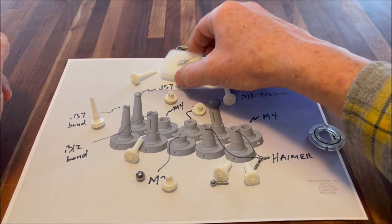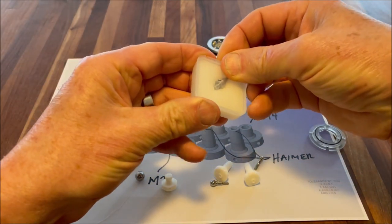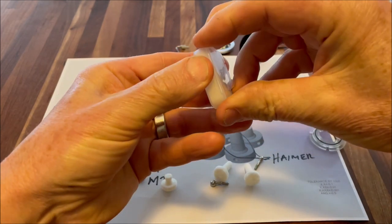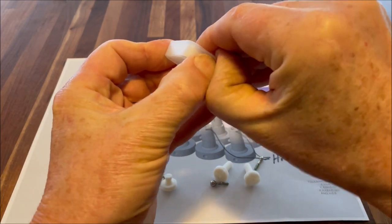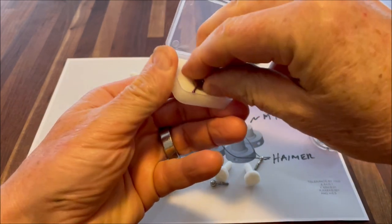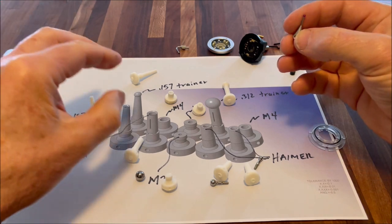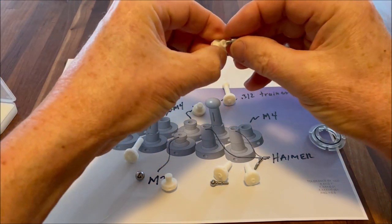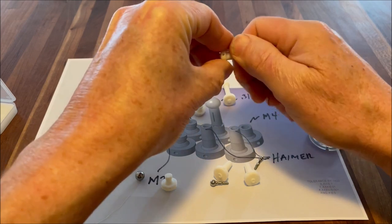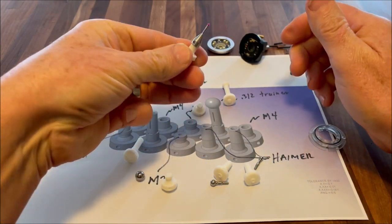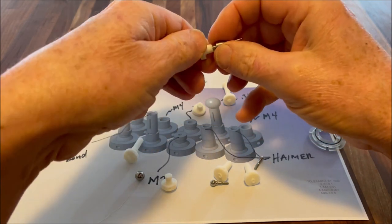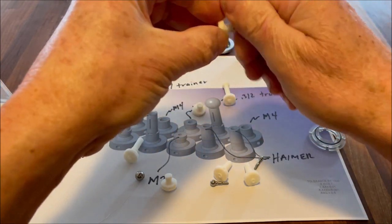This is a ruby tipped M4 probe. That is probably the most common kind of probe. For instance, the Tormach passive probe uses an M4 thread. You'll have to tap the M4 thread and then you can screw in an M4 probe.